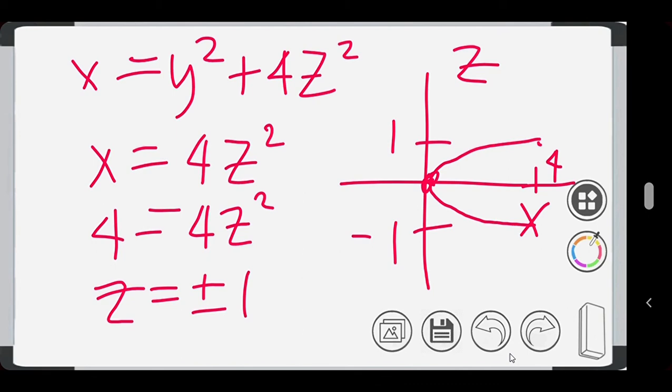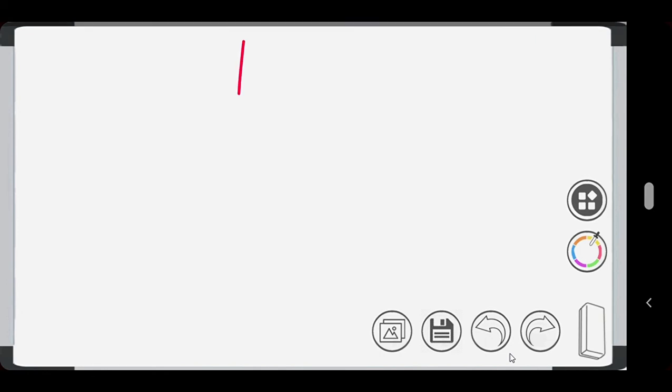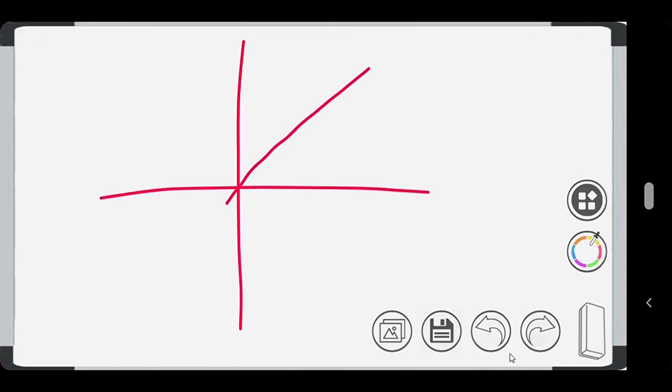Now, let's draw those 2D traces in a three-dimensional coordinate system. We have our x-axis, our positive y-axis, and our positive z-axis. The trace that we got in xy plane is the equation x is equal to y squared, which is a parabola that opens in the positive x direction.